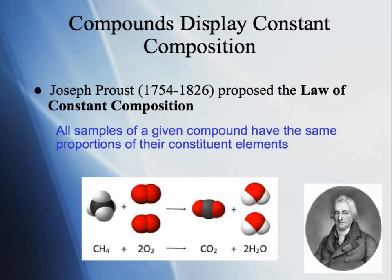Back in the 18th century, a gentleman named Joseph Proust worked with many different kinds of compounds. He analyzed them and proposed the law of constant composition, which states that samples of a given compound have the same proportions of their constituent elements. Just like water is always H2O — always two hydrogens and one oxygen.